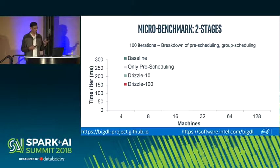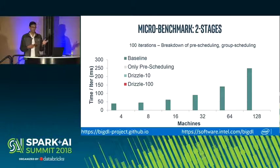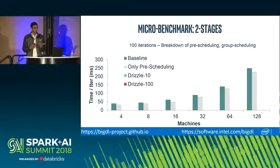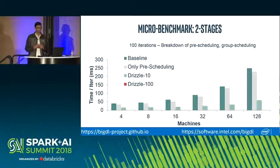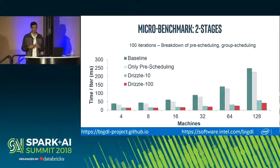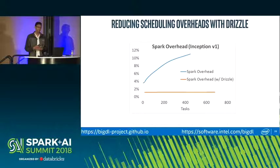The micro-benchmark results show: the baseline Spark scheduler goes from around 40 milliseconds to 250 milliseconds from 4 to 128 machines. Pre-scheduling alone reduces this somewhat but stays around 200 milliseconds at 128 nodes. Adding group scheduling with group size 10 (Drizzle-10) brings latency down to 50 milliseconds, and Drizzle with group size 100 reduces it further. For Inception V1, the scheduling overhead drops from around 12 percent at 512 tasks to less than one percent with Drizzle.